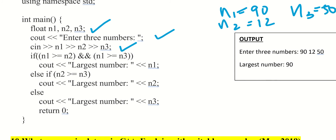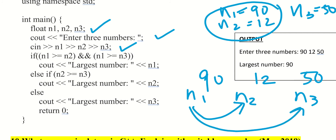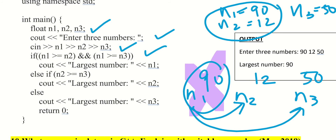You can check those 3 numbers using mathematical logic. If you have n1=90, n2=12, n3=50, you can write the condition. If n2 and n3 are both greater than n1, we check n2 or n3. The answer is n1 is the largest.